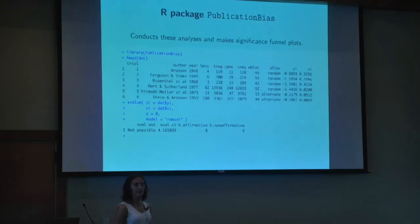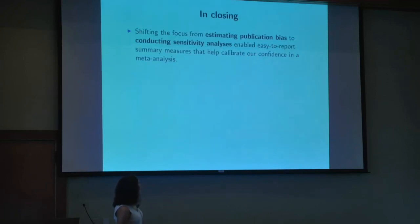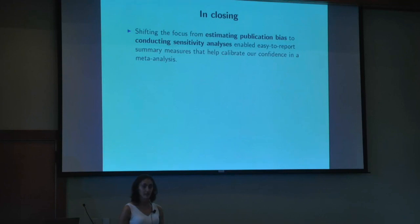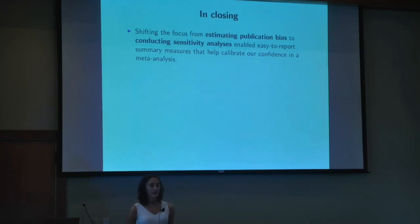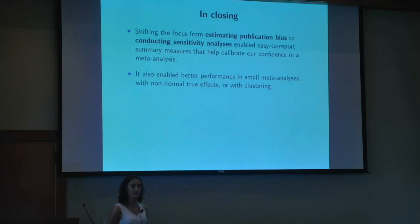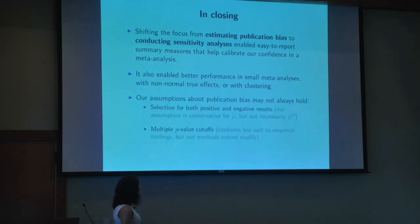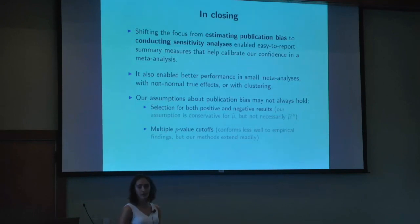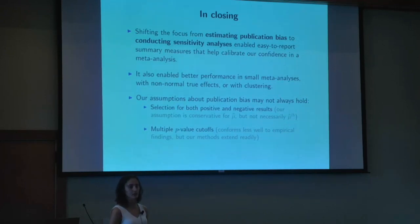We have an R package called publication bias so you don't need to do the math by hand. In closing, by shifting the focus from estimating the severity of publication bias — which is important but statistically challenging — to conducting sensitivity analyses asking what hypothetical level of bias would be needed to explain away results, we've arrived at useful summary measures to calibrate confidence in meta-analyses. Critically, we've done so in a way that obviates some challenging assumptions of existing methods. We discuss in the paper situations where our assumptions are either statistically conservative or where our methods can be extended to accommodate realistic violations.